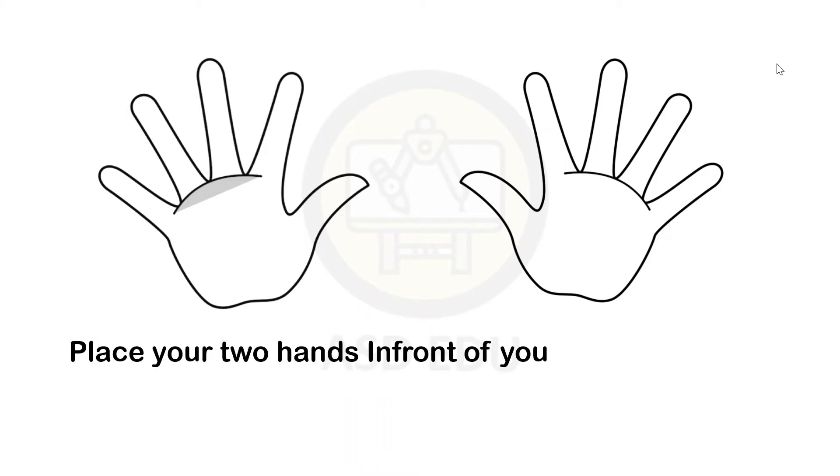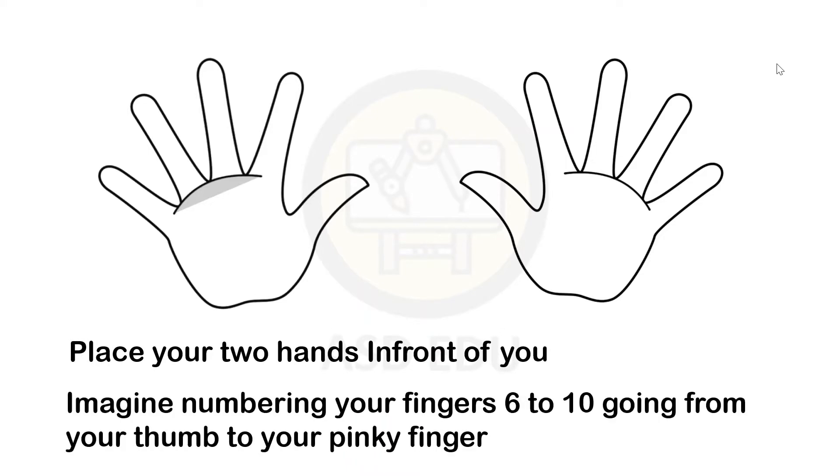Place your two hands in front of you. Then imagine numbering your fingers 6 to 10 going from your thumb to your pinky finger.